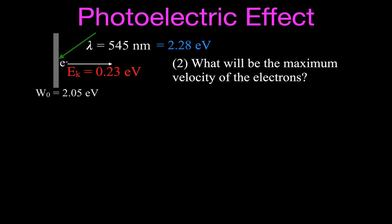Now let's do example number one, which involves the photoelectric effect. In this diagram we're shining light on a metal plate with a wavelength of 545 nanometers, or an equivalent energy of 2.28 electron volts. The work function is 2.05 electron volts, so the energy left over for the photoelectrons coming off the plate is 0.23 electron volts. We want to find the maximum kinetic energy and velocity of those electrons using the kinetic energy formula: KE equals one half mv squared.